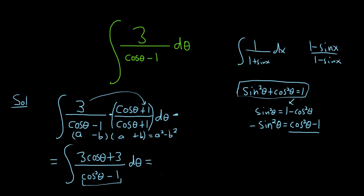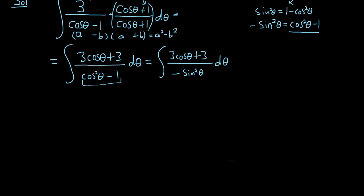So this is equal to 3 cosine theta plus 3. Then on the bottom we simply have negative sine squared theta. And then we have d theta. Getting there. Good stuff. So now we just got to break it up, break it up into two different integrals and see what happens.